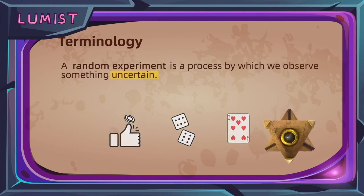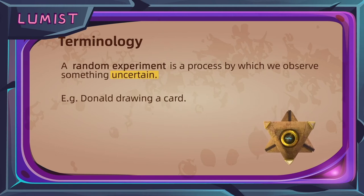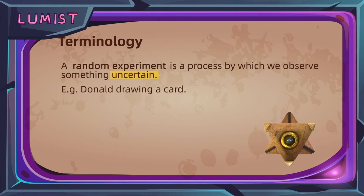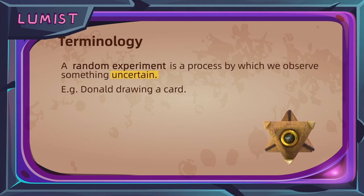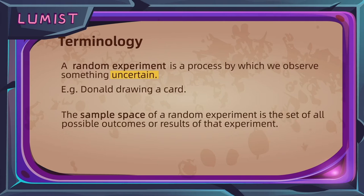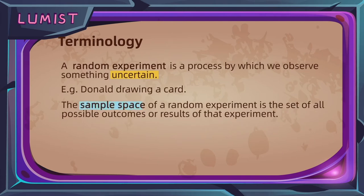In our example, after Joe draws his card, Donald needs to draw a card from the deck, and we don't know which card he will get. So this itself is our random experiment. For a random experiment, its sample space is defined as the set of all possible outcomes for that experiment.